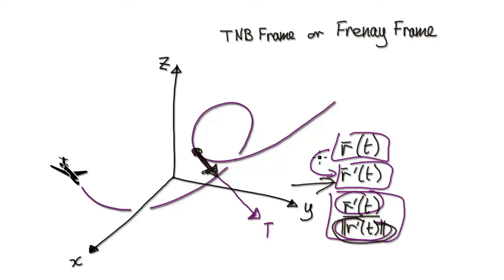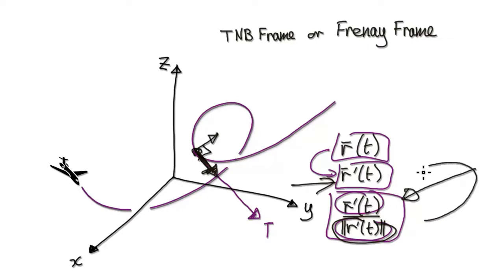Here's an important point: if you differentiate the unit tangent vector, it will give you your normal vector and it's always at 90 degrees. But if you try to differentiate the tangent vector itself, it won't give you your normal vector — it won't be at 90 degrees.